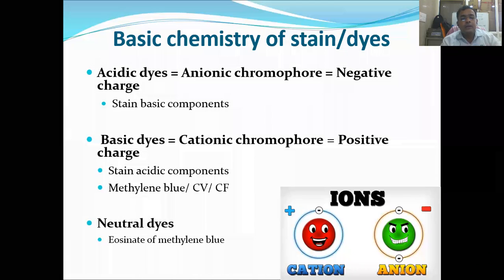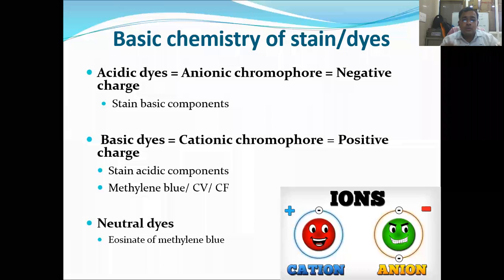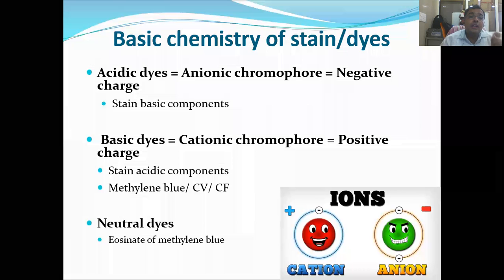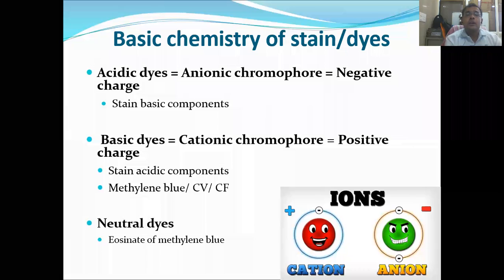In general, all bacterial cell walls have a net negative charge. When an acidic dye with a negative charge is used, it repels the bacterial cell wall and stays in the background instead of staining the bacteria. In contrast, when a basic dye with a positive charge is used against a negatively charged bacterial cell wall, they attract and bind to each other, staining the bacteria. This principle should be clear, along with examples of acidic and basic dyes.